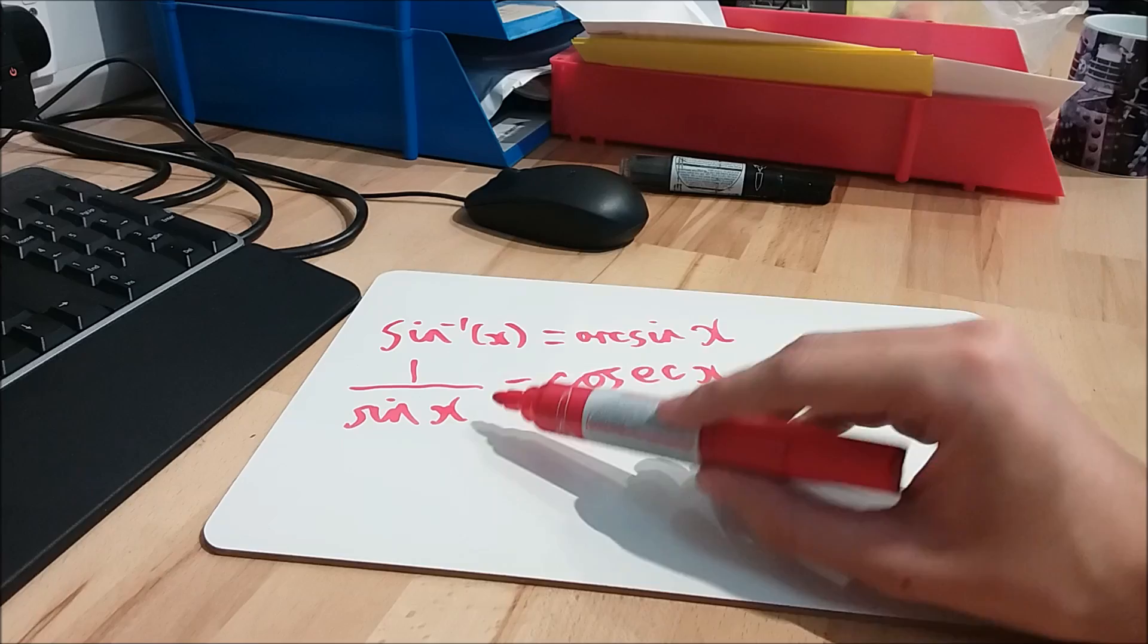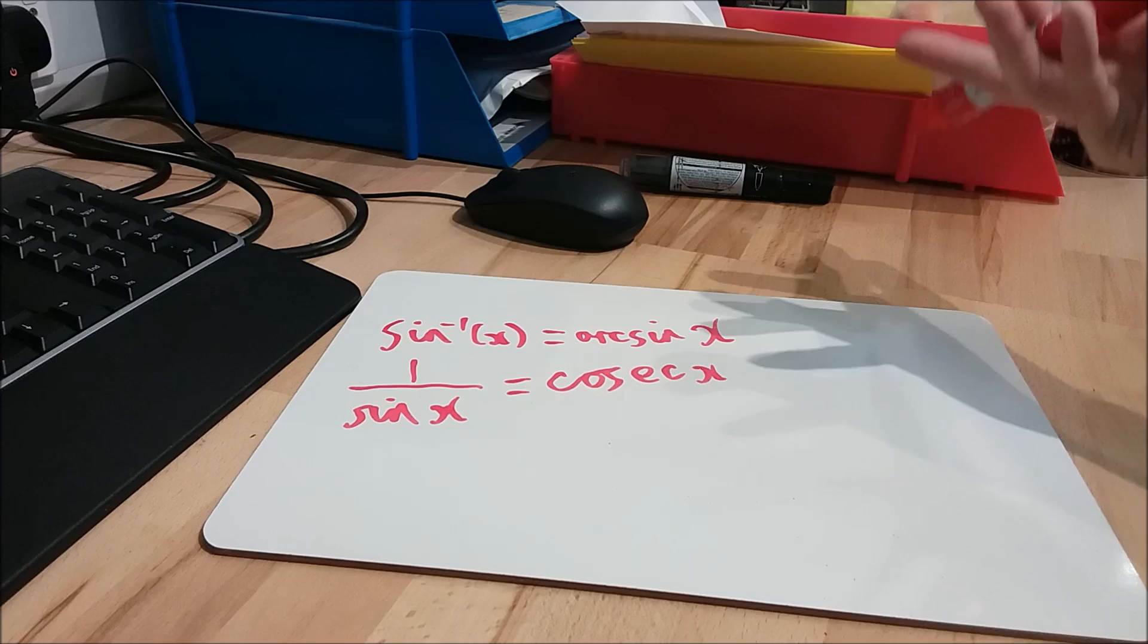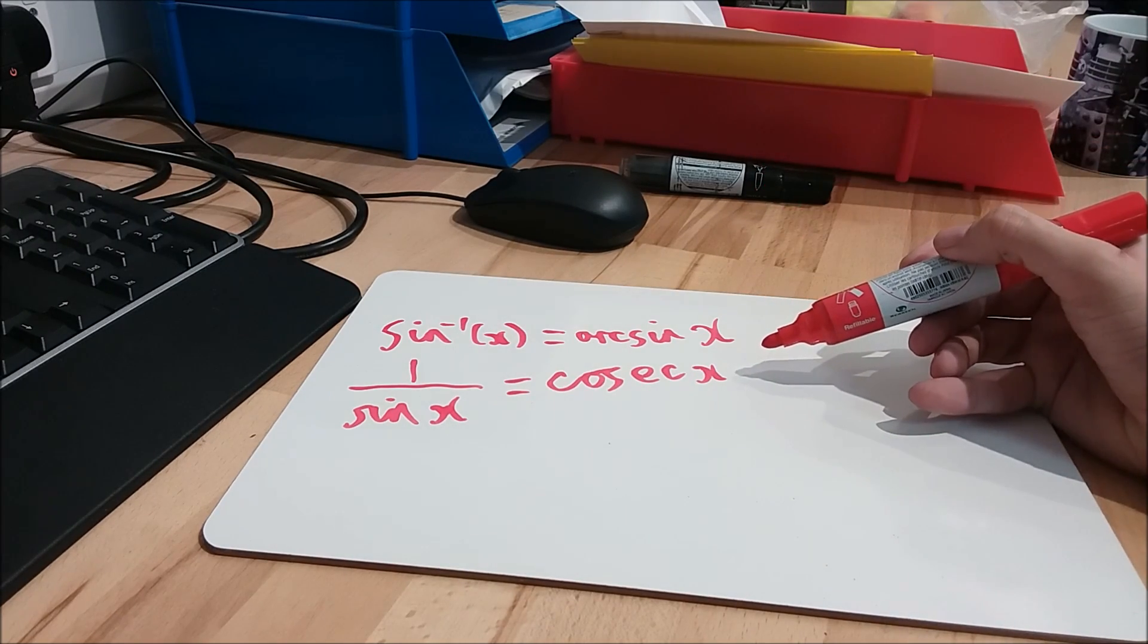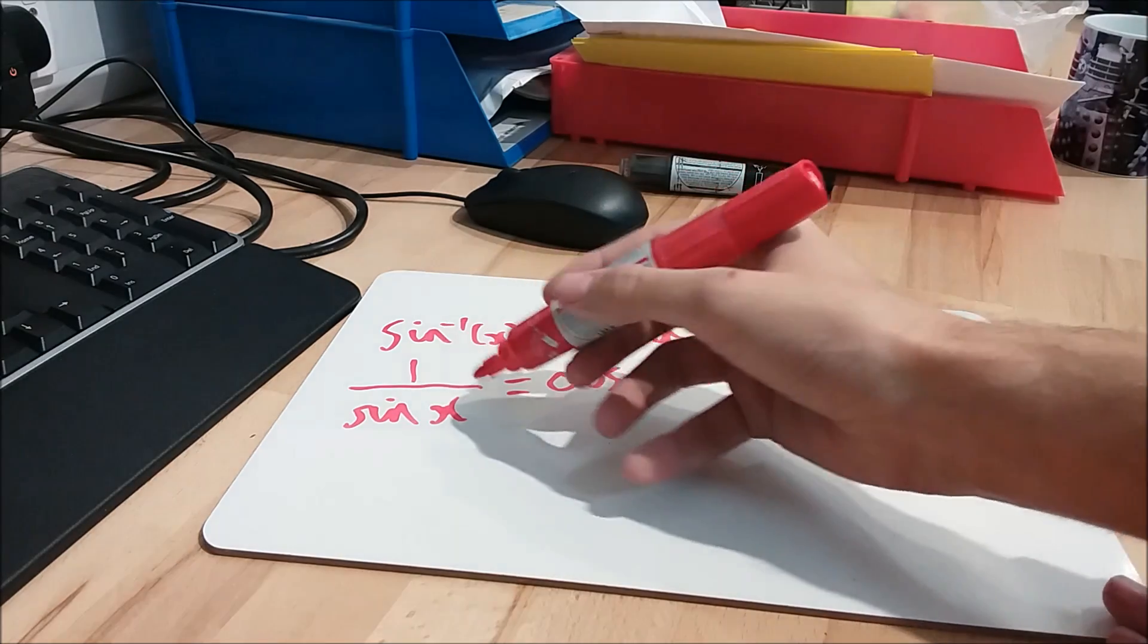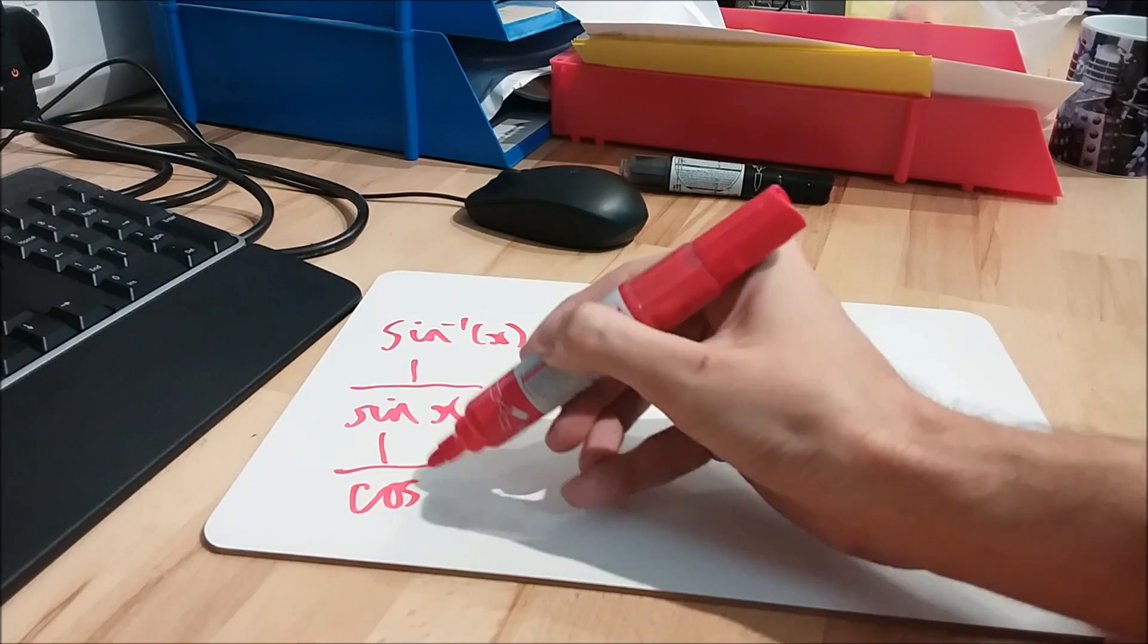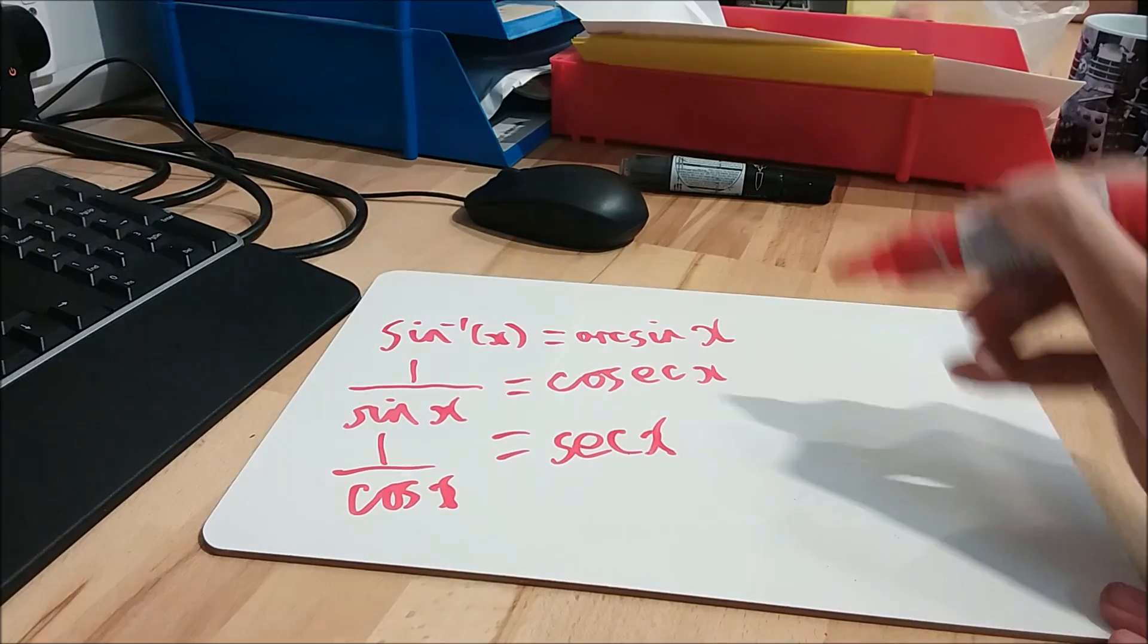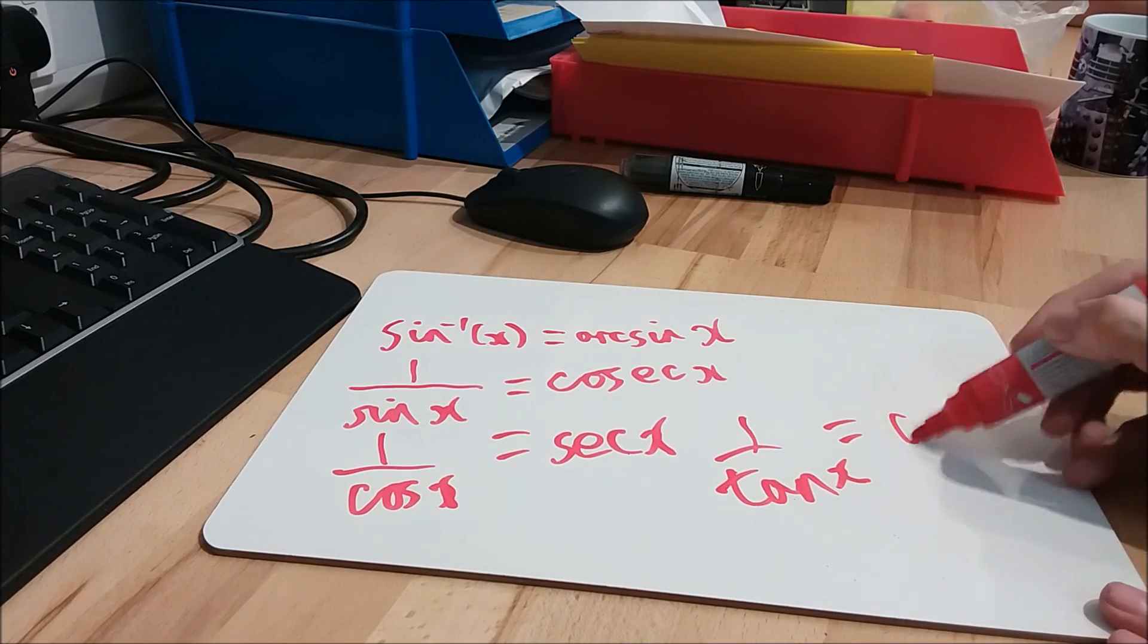But one over sine of x means something different to arc sine, it's the multiplicative inverse, and we have a special name for that as well, we call it cosec x. When I initially look at cosec x, it's slightly confusing, you have to work out which one of the trig functions it maps with, because there are a whole set of them. One over sine of x is cosec x, it's just an arbitrary name, and completing the set, we've got one over cos x equals sec x, and similarly, one over tan x equals cot x.